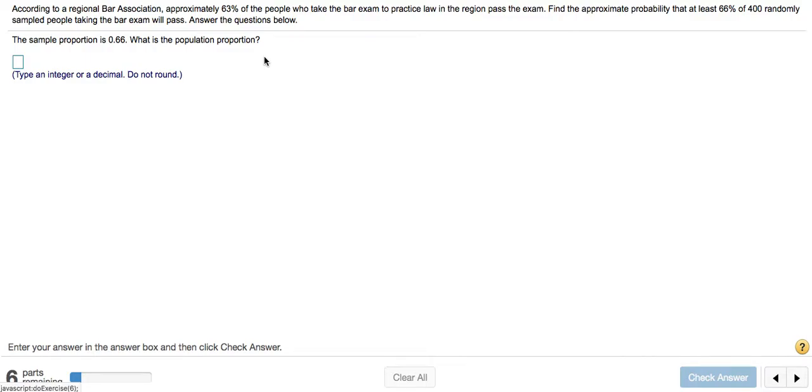According to a regional bar association, approximately 63% of people who take the bar exam to practice law in a region pass. Find the approximate probability that at least 66% of 400 randomly sampled people taking the bar exam will pass.